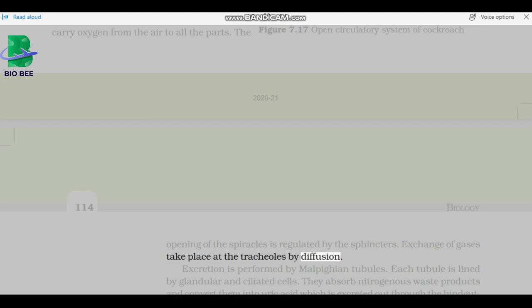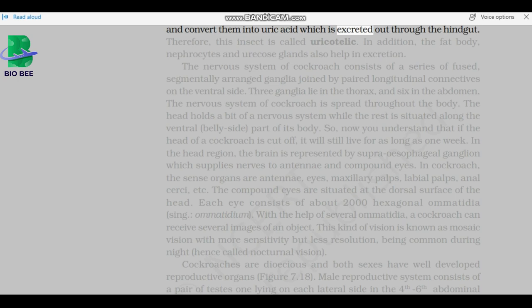Excretion is performed by malpighian tubules. Each tubule is lined by glandular and ciliated cells. They absorb nitrogenous waste products and convert them into uric acid which is excreted out through the hindgut. Therefore, this insect is called uricotelic. In addition, the fat body, nephrocytes, and uricose glands also help in excretion. The nervous system of cockroach consists of a series of fused, segmentally arranged ganglia joined by paired longitudinal connectives on the ventral side. Three ganglia lie in the thorax and six in the abdomen. The nervous system of cockroach is spread throughout the body. The head holds a bit of a nervous system while the rest is situated along the ventral, belly side, part of its body.